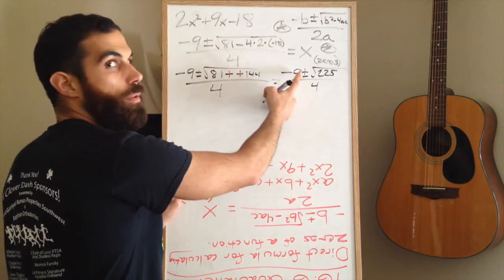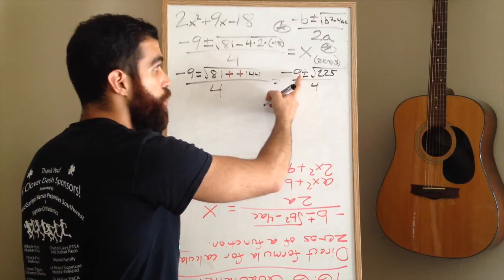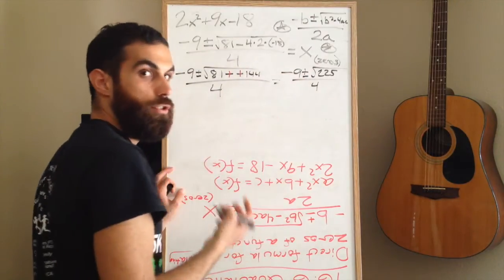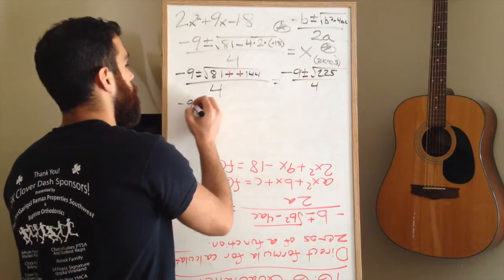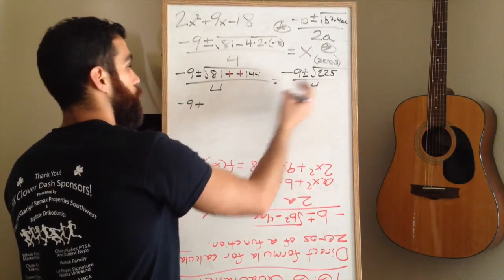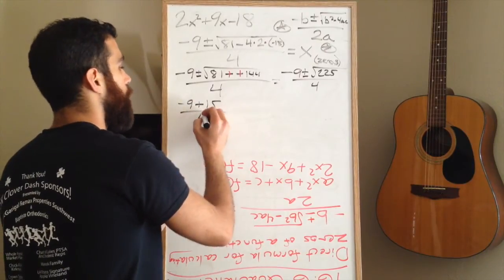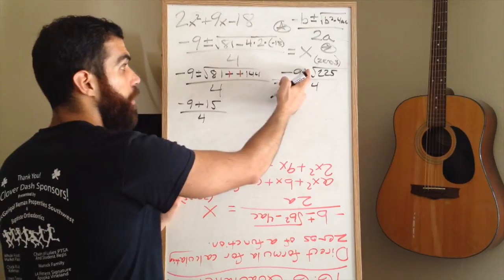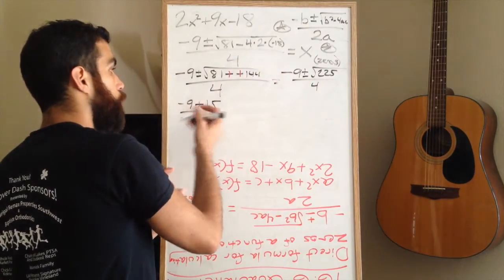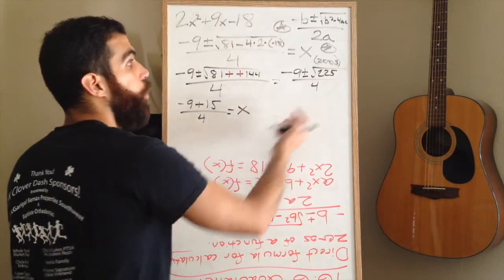Now, you have to deal with the plus minus sign. Because you have plus and minus, you have to write down two separate situations, two separate equations. Negative 9, plus the square root of 225, that's 15. All of that goes over 4. This is your first equation. You take the plus, and you make an equation where you're just using the plus sign. And that's going to equal x, one of your zeros.